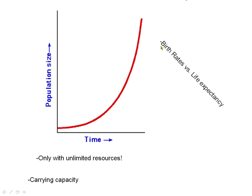Make sure you understand that what drives exponential growth is birth rates. Life expectancy is not nearly as important, because living things have an opportunity to die once, but they can reproduce many times.